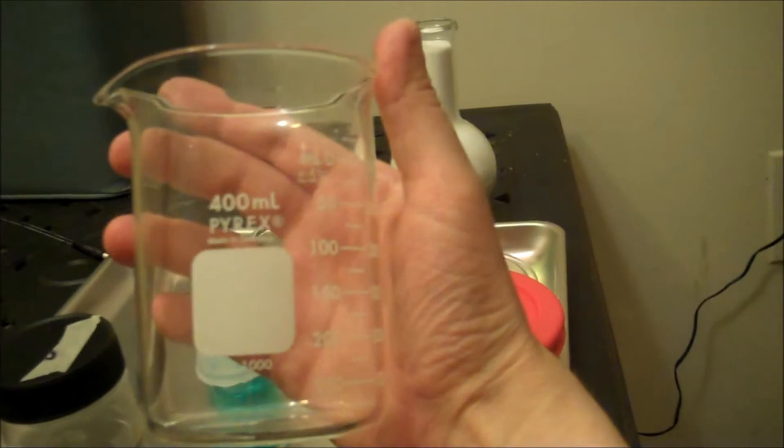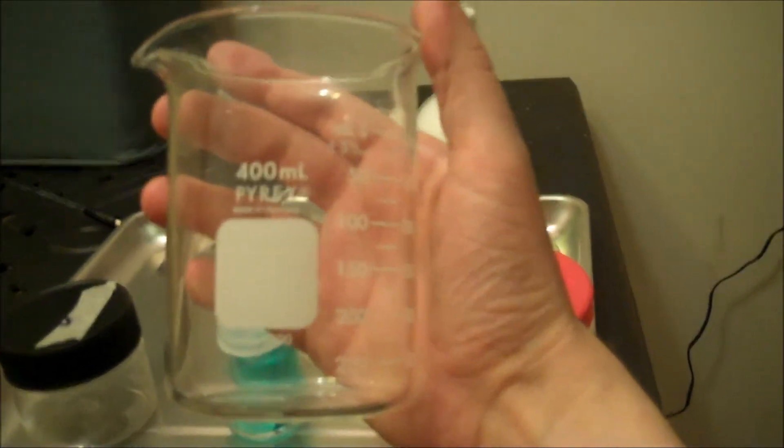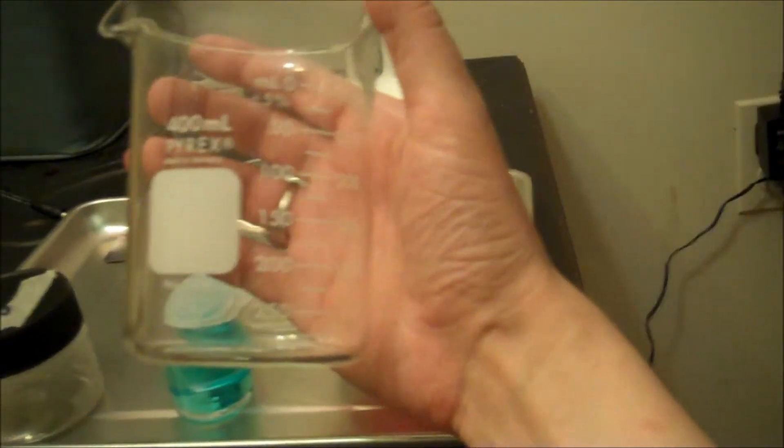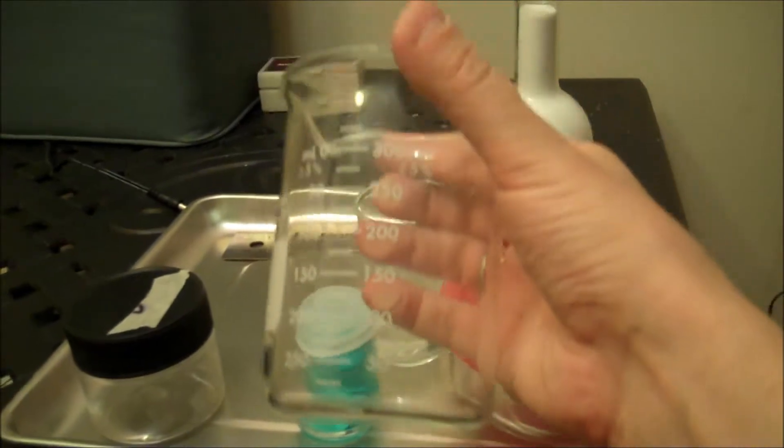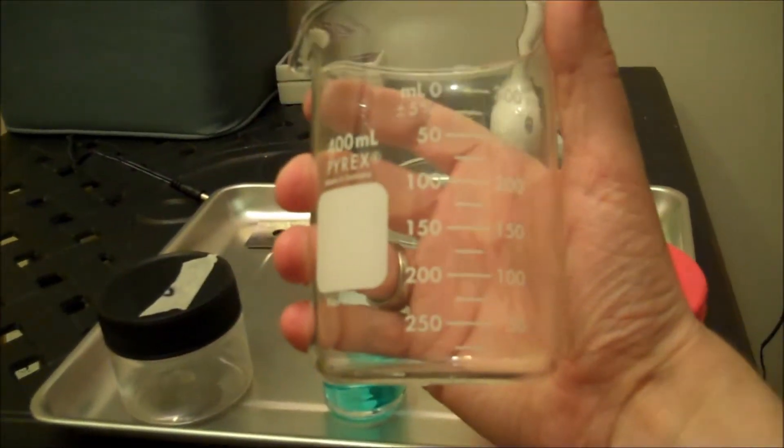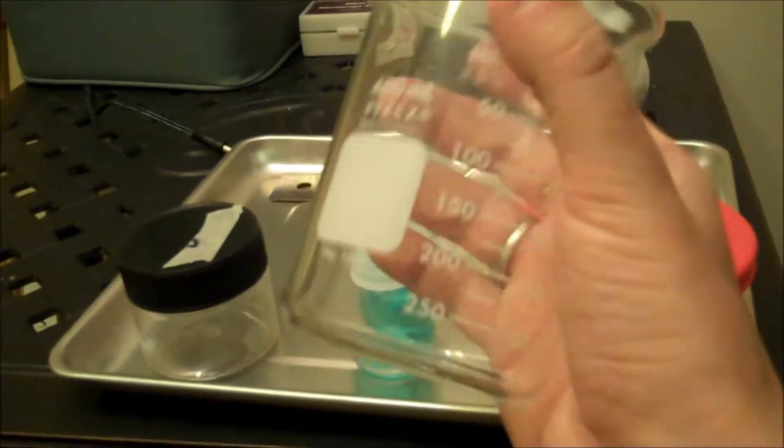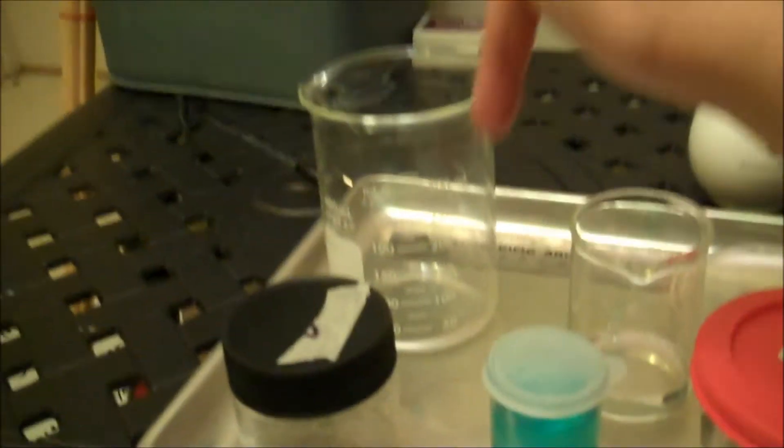Excuse me, this is a real Pyrex beaker too. Corning Pyrex beaker, model 1000. Top of the line. This is a borosilicate product. It's boron and silicon put together, more or less. That's the good stuff.